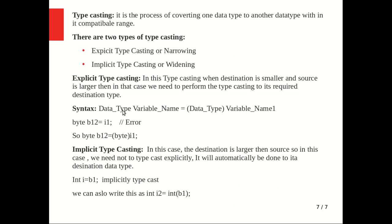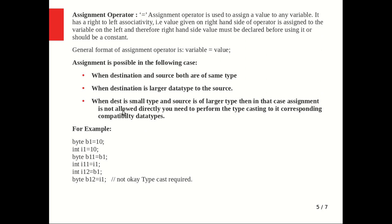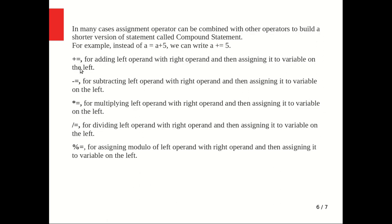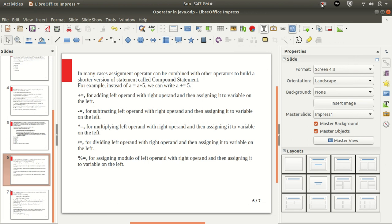We have seen the assignment operator = with examples, all compound assignment operators, and both types of typecasting. Explicit typecasting is done by the developer and implicit typecasting is done by the JVM itself. In the next part we are going to see the relational operator with an example. Stay tuned, keep learning, thank you and have a nice day.